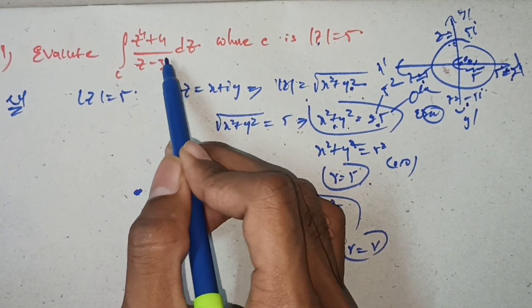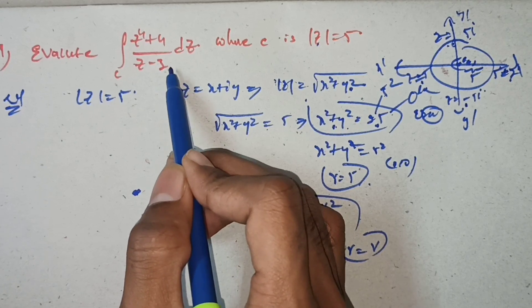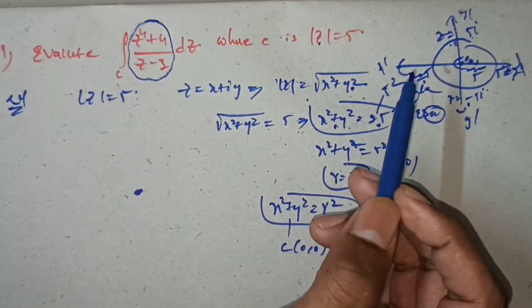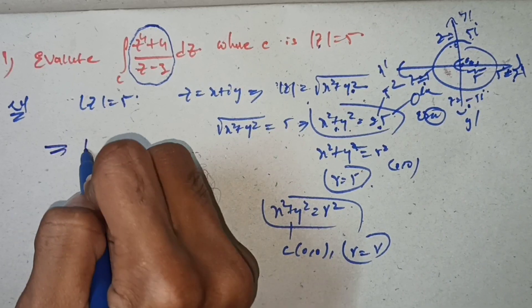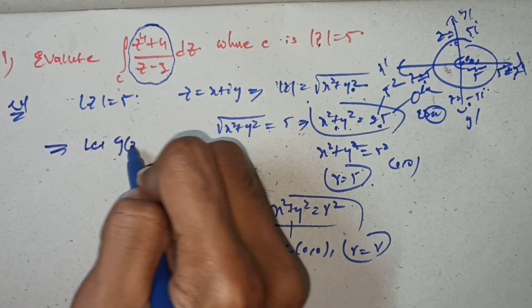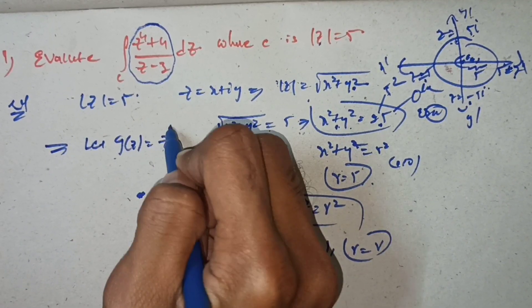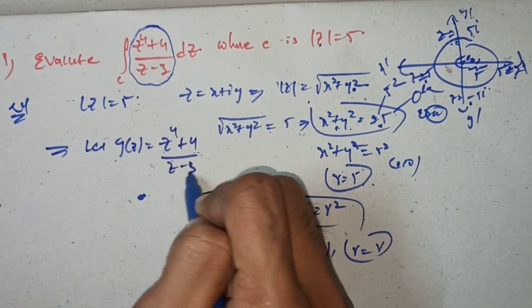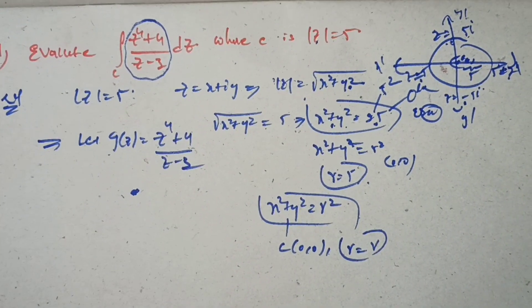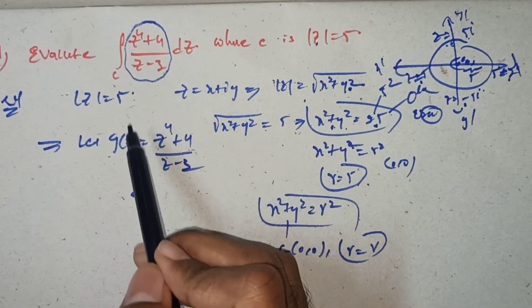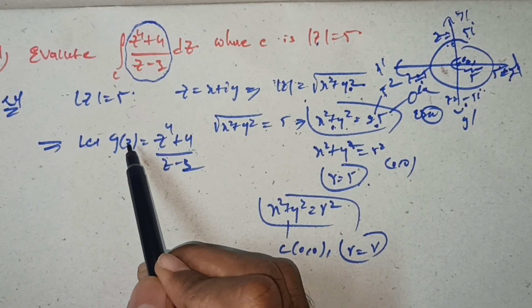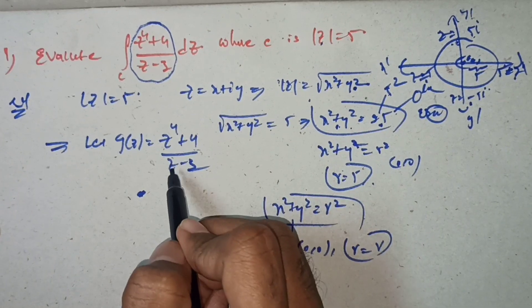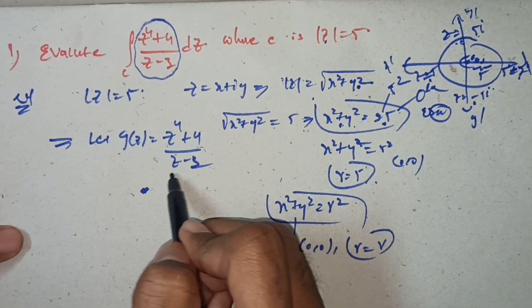Here we have the integral of (z⁴ + 4)/(z − 3) to evaluate. We define a function g(z) = (z⁴ + 4)/(z − 3). We need to find the singular point of this function.